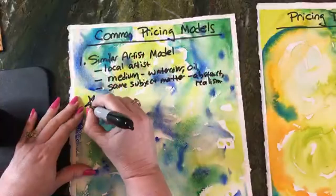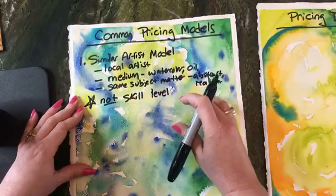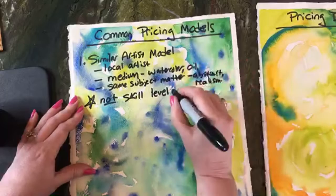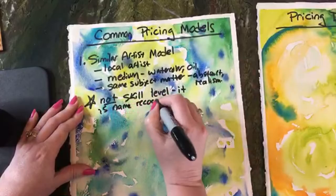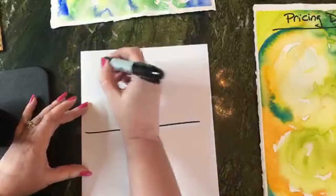The key with this model is: don't compare based on skill level. Sales are not based on skill level — sales are based on name recognition. So when you look for a similar artist to compare against, look and see if they have the same kind of level of recognition as you.